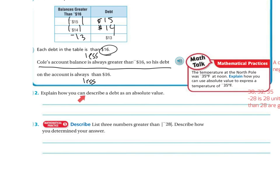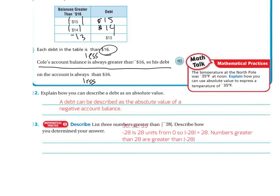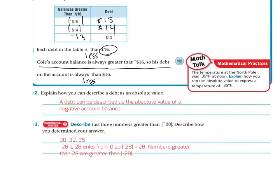Explain how you can describe the debt as an absolute value. Well, a debt can be described as an absolute value of a negative account balance. Describe: list three numbers greater than negative 28 and describe how you determine your answer. Well, here's three numbers. We have 30, 32, 35. Negative 28 is 28 units from zero. So the absolute value of 28 is going to be 28. Numbers greater than 28 are going to be greater than the absolute value of 28.